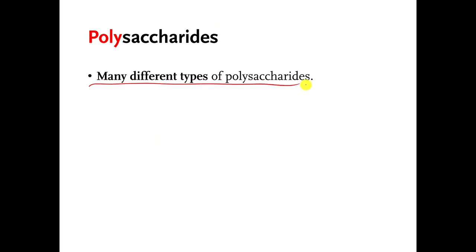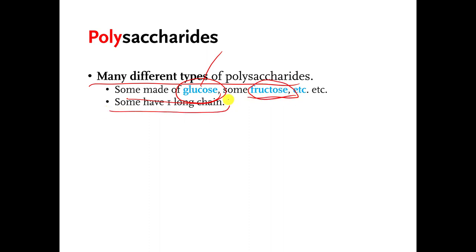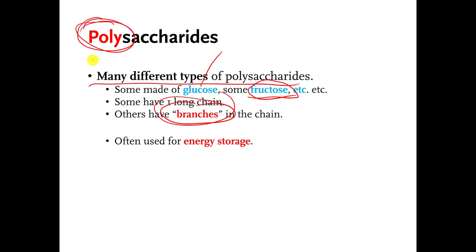There are many different kinds of polysaccharides. Some are made of glucose, which is a monosaccharide, a bunch of glucoses connected to each other over and over again. Some are made of fructose connected to each other over and over again. Some have one long chain, other polysaccharides have branches, and I will show you an example of a branch in a little bit. For the most part, the job of polysaccharides is to store energy.